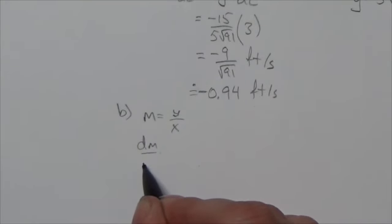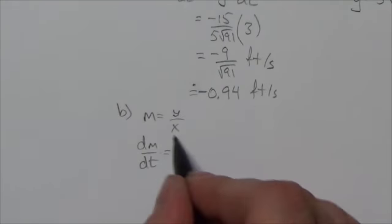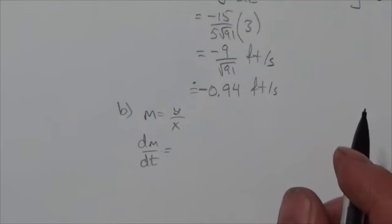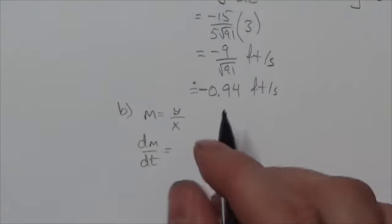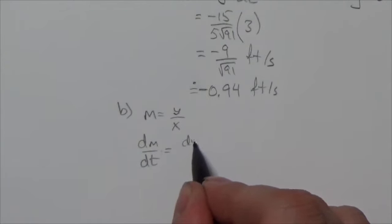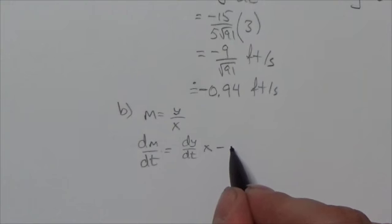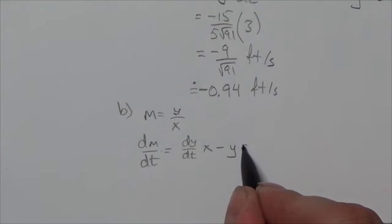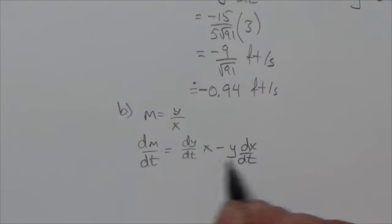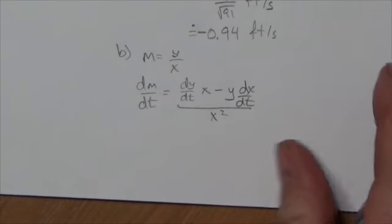So the derivative of the slope with respect to time will be, well, I'm going to have to use the quotient rule here. The derivative of the numerator, dy by dt, multiplied by the denominator, minus the numerator, times the derivative of the denominator, all over the denominator squared.